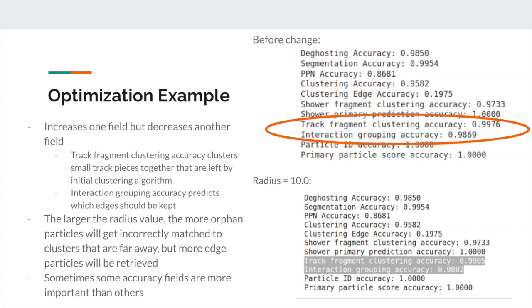This change would be desirable in cases where the focus of analysis was not on the edges of the clusters, or where it was very important to get all track fragments put together, such as when using images which consist of mostly track-like particles.